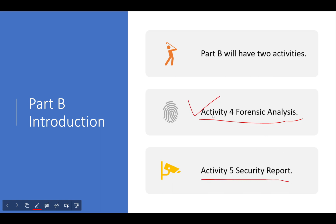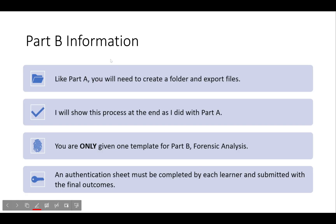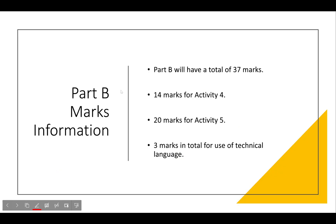You get a template for Activity 4 but not for Activity 5. Like Part A, you will need to create a folder and export files — I'll show that process at the end. You are only given one template for Part B, which is the forensic analysis for Activity 4. An authentication sheet is given to you by the invigilator on the day, so don't worry too much about that.